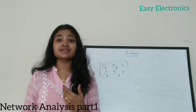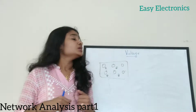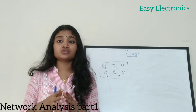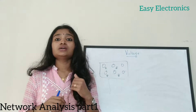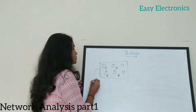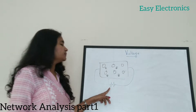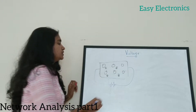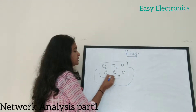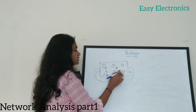Next we are going to discuss the concept of voltage. We said current is the flow of charge or electrons. In order to make the charge or electrons flow, you need to apply some external force or energy. Consider connecting a conductor to a battery — the battery provides the necessary energy to make the electrons flow through the conductor.